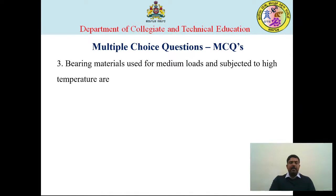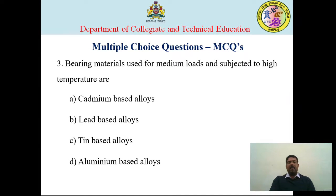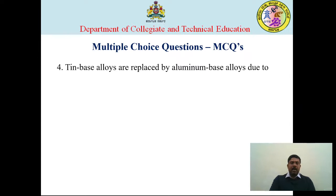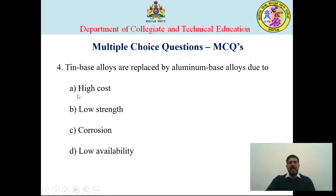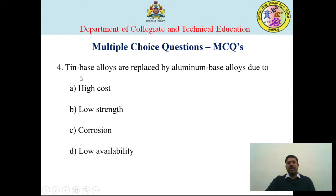Question three: bearing materials used for medium loads and high temperatures — is it cadmium, lead, tin, or aluminium? Cadmium-based alloys are used for higher temperature applications, so option A — cadmium — is the correct answer. Question four: tin-based alloys are replaced by aluminium-based alloys due to what reason? The answer is high cost — tin materials are costlier than aluminium-based alloys, and aluminium-based alloys are also lightweight.